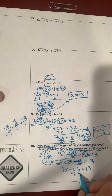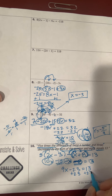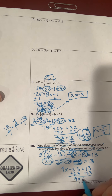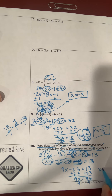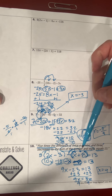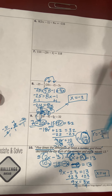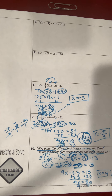Adding 23 to both sides gives 9x equals 36, and dividing both sides by 9 gives x equals 4. You can see the mistake I made — make sure you don't do the same.